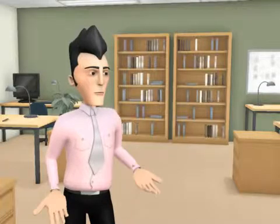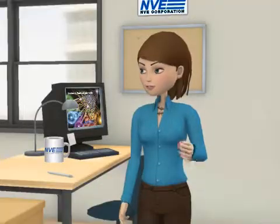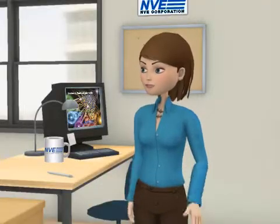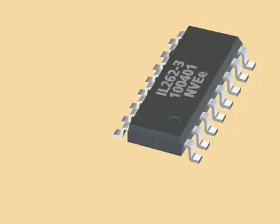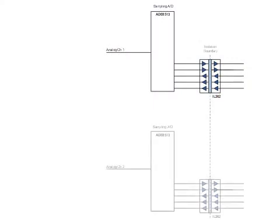What if I have multi-channel ADCs? Then you need an IL-200 series 5-channel isolator. For example, the IL-262-3 has 5 channels in a 0.15-inch SOIC-16. This circuit is an example of a multi-channel sampling system with separate ADC cells.